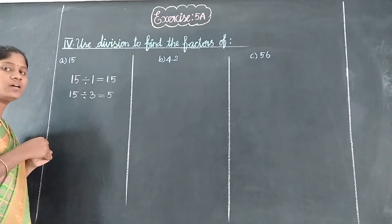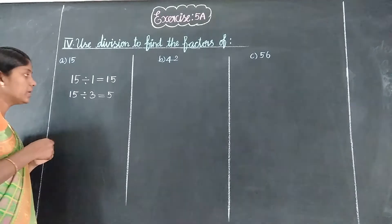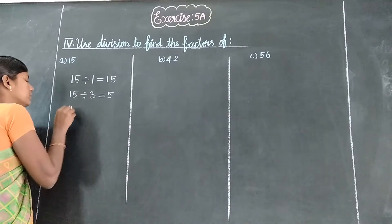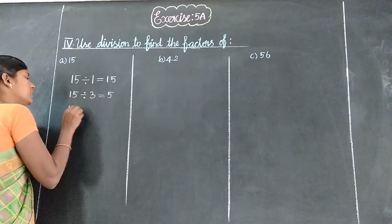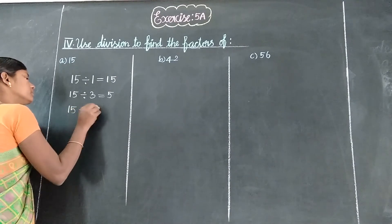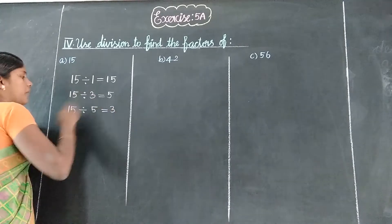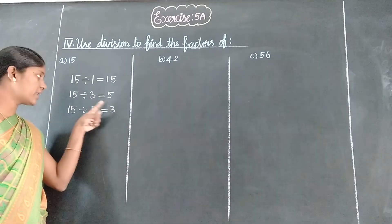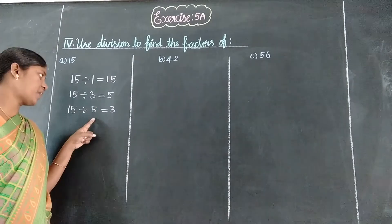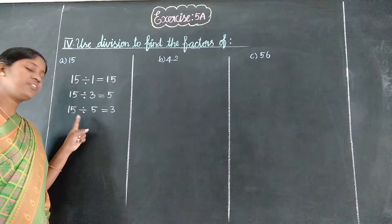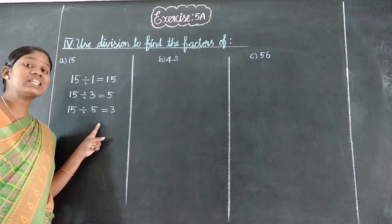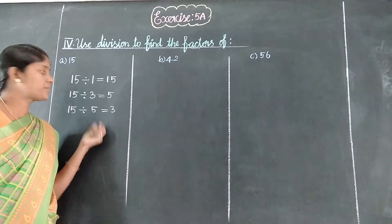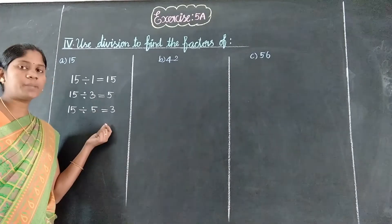4 table — no, we skip it. Next, 5 table — we check it. Yes. 5 table: we get it. We get 3 and we get it. 3 is equal. Next, 5 is equal. 15 divided by 5 equals 3. 5 are equal.